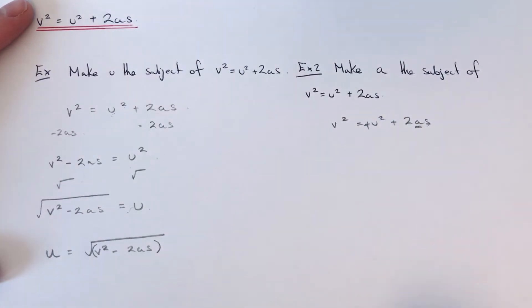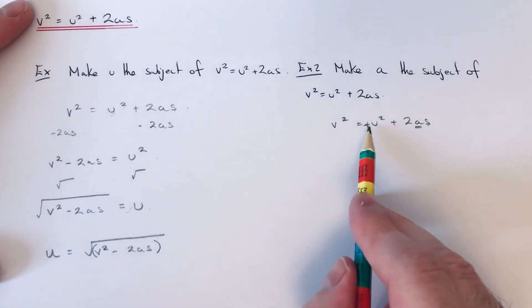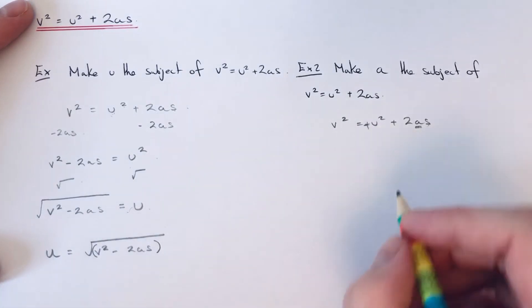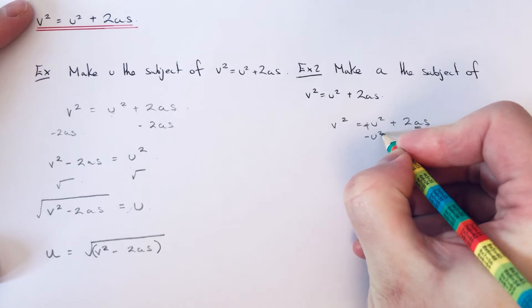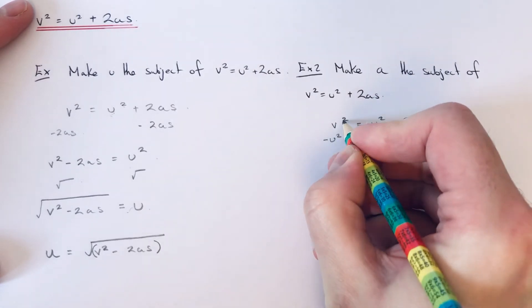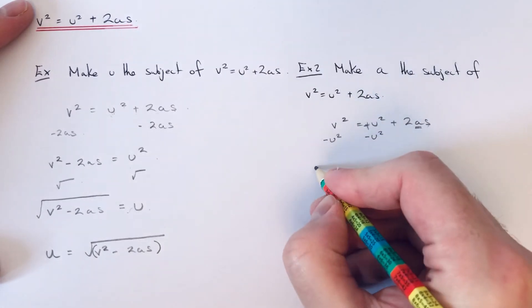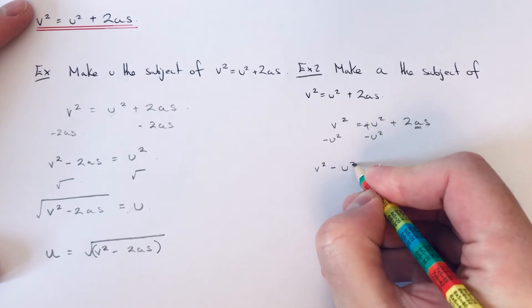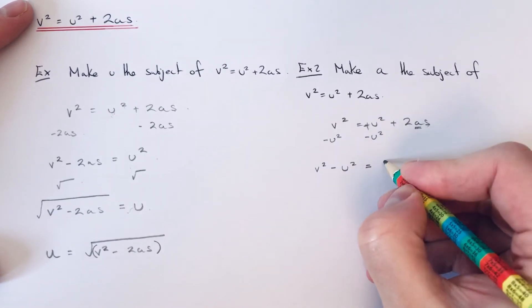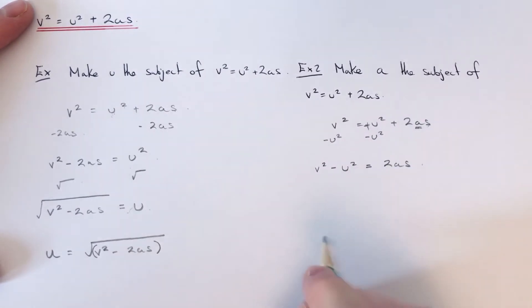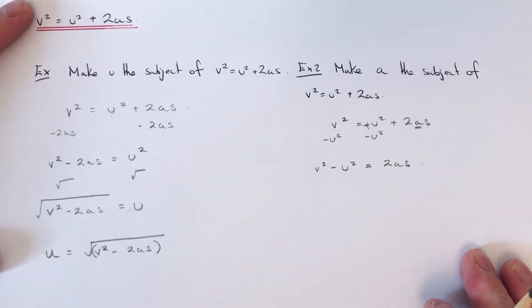We need to do the opposite in reverse. The first thing we want to do is get rid of that plus u² term by minusing u². So on the left-hand side we have v² - u² = 2as.